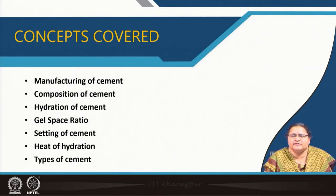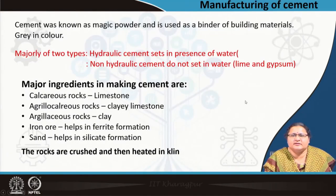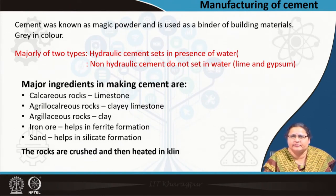Mostly we use ordinary Portland cement for general constructions, particularly suited to our atmospheric conditions of temperature and humidity. Cement was found long ago and was named as 'magic powder' — because it could set, it was an adhesive, and it helped in binding any kind of material.